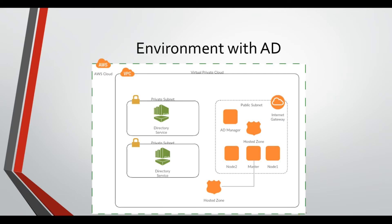These are the changes we'll be adding to our environment. We'll be adding two private subnets which will host our Active Directory. The reason for having two is that this is a requirement when creating the Active Directory on Amazon Cloud - to have two different subnets in two different zones for high availability reasons. The subnets are private because only our OpenShift environment needs to access these servers. In our public subnet we'll be adding a Windows machine and attaching it to the domain so we can use it to control and manage the Active Directory.